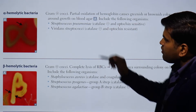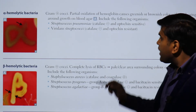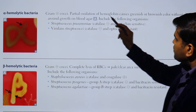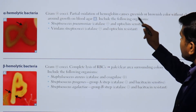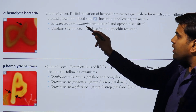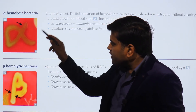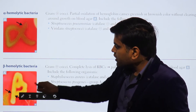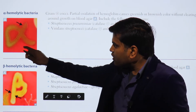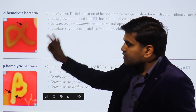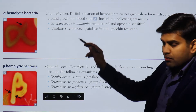Talking about alpha hemolysis - this is incomplete lysis of the RBC, with partial oxidation of the hemoglobin. These gram-positive cocci cause a greenish or brownish color without clearing around the growth on the blood agar. So if you are looking at the blood agar, there is no clearing where the bacteria have grown - the background remains intact, and the green or brownish color indicates partial hemolysis.